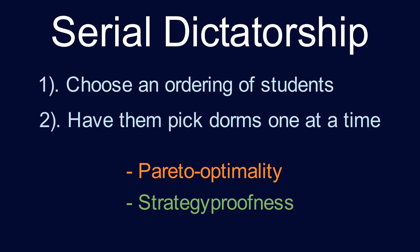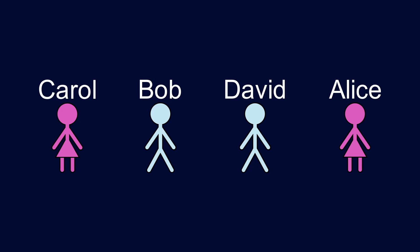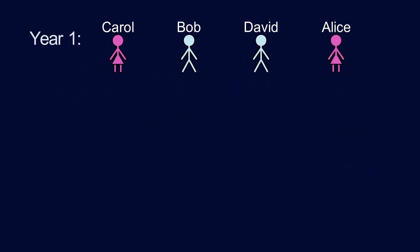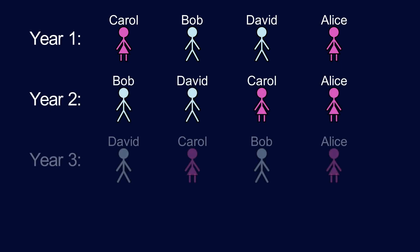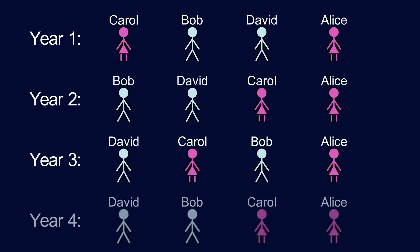This method of fixing some ordering of students and then having them choose dorms one at a time actually has a name — it's called Serial Dictatorship, because every student gets to feel like a mini-dictator with the power to choose where they want to live. This is a very simple idea — maybe it seems a bit too simple — but it gives us Pareto optimality and strategy-proofness, which is what we need. Though there's still one detail that's a bit vague: how do we choose this ordering of students? If all we care about are these two properties, the order doesn't matter — any order works. But the order does matter in practice, as the last person ends up with the fewest options, so it's a bit unfair.